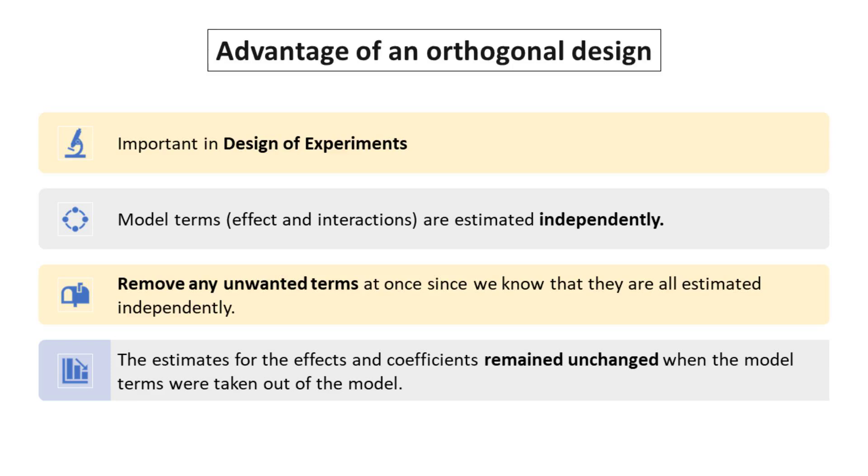Secondly, remove any unwanted terms at once since we know that they are all estimated independently. The estimates for the effects and coefficients remained unchanged when the model terms were taken out of the model. By removing unwanted terms, we can streamline our models and focus on the most relevant factors, leading to more precise and actionable insights.